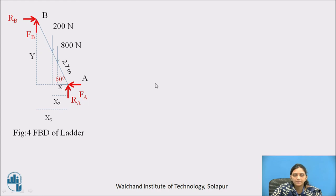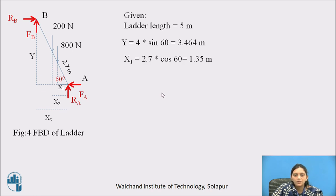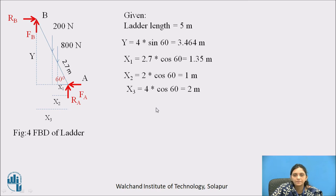Here is the solution. The free body diagram is shown. We determine all distances Y, X1, X2, and X3. Here the vertical wall is not stated as smooth, so it also offers friction FB. We determine the distance of FB with respect to reference point A. Y, X1, X2, and X3 are calculated using trigonometric formulae.